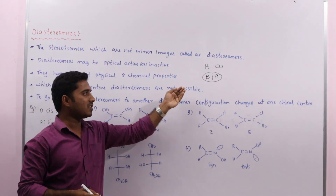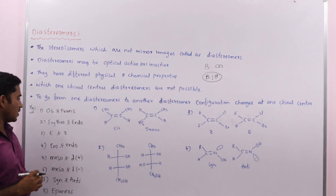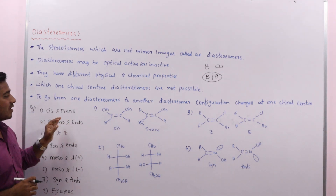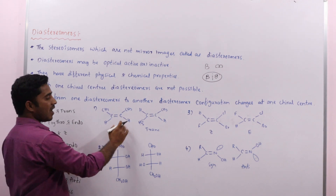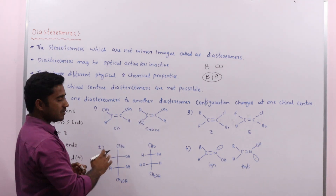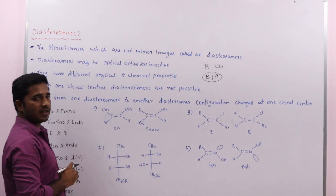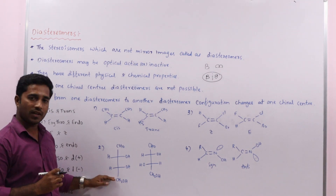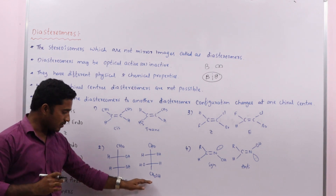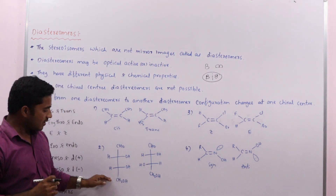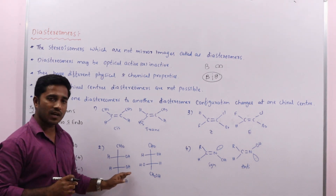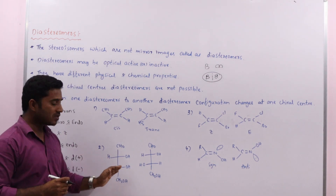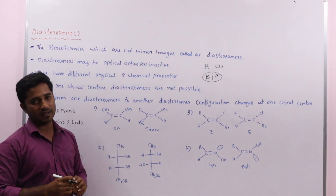Applying this to organic compounds: cis and trans isomers are stereoisomers but they are not mirror images, so cis and trans are called diastereomers. In the same way, erythro and threo isomers are also not mirror images — they are stereoisomers but not mirror images — so erythro and threo are also called diastereomers.